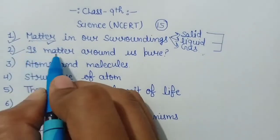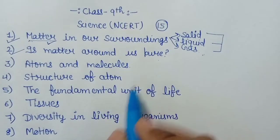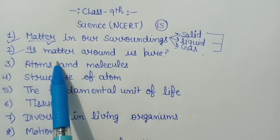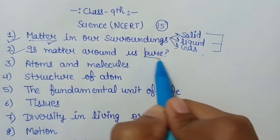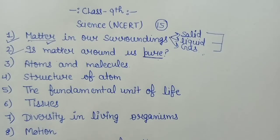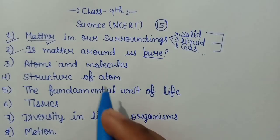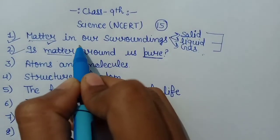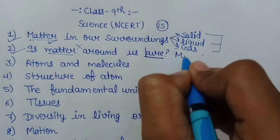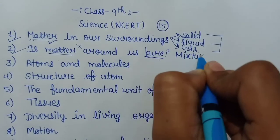Then we will move to chapter number 2 — Is Matter Around Us Pure — कि हमारे आसपास जो matter है, क्या वो pure है? So what do we mean by purity? As an example, जब भी हम market में घी लेने जाते हैं then we say — भाईया हमें pure घी देना कि उसमें कोई मिलावट ना हो। लेकिन in the terms of science, हमारे आसपास जो भी matter है वो बिल्कुल भी pure नहीं है — वो क्या है? Mixture है pure substances का।